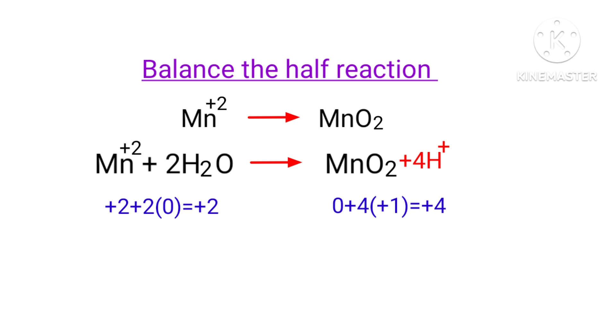To make them equal, you should add electrons, as you can't add protons. If you think of adding two protons to the left side to make it equal to +4, it is wrong. But you can add two electrons to the right side to make it equal to +2. Now the charges are balanced on both sides.